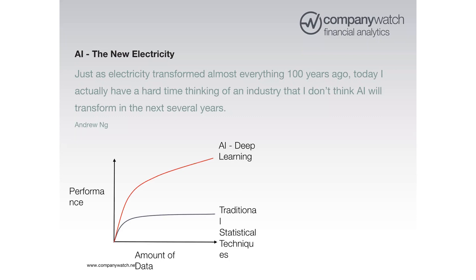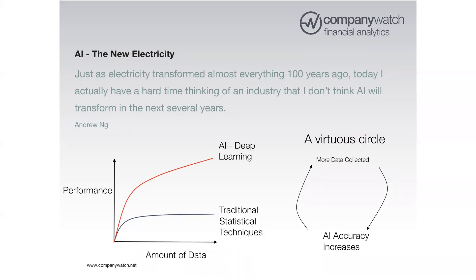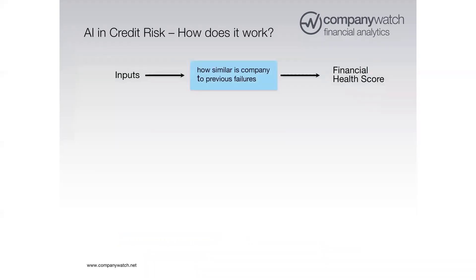The reason this is happening is that with traditional statistical techniques — like the Z-score — they kind of had a plateau of performance: the more data you threw at them, performance would come to a plateau. Whereas with a lot of these AI algorithms and deep learning, the more data you have — if you can throw hundreds of millions of data points at a particular problem — it will learn and continue to learn with greater performance. It's a virtuous circle: we collect more data, the accuracy of AI increases, and so on.